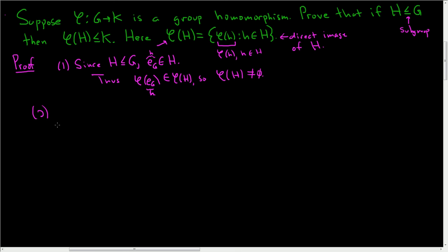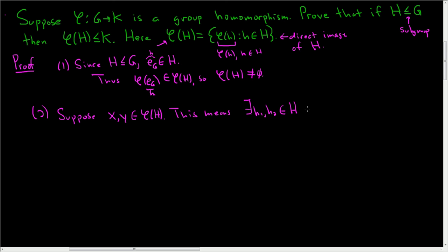Two: we have to prove it's closed under the group operation. So suppose we have two elements x and y in phi of H. What does this mean? Well, this means there exist h sub 1 and h sub 2 in H such that x equals phi of h sub 1 and y equals phi of h sub 2. And we have to show that the product x times y is also an element of phi of H.